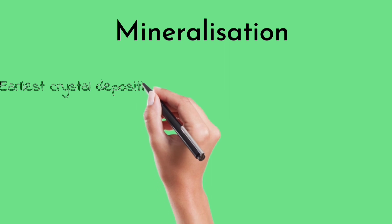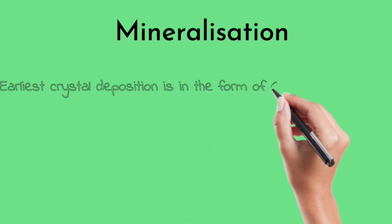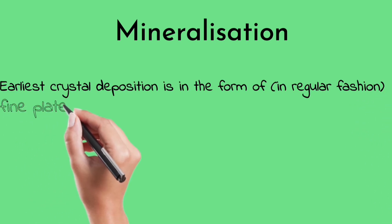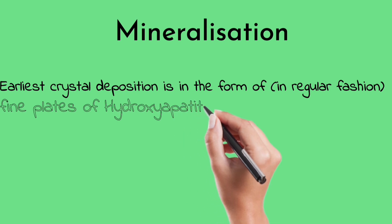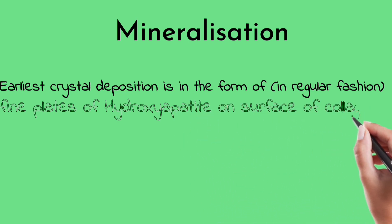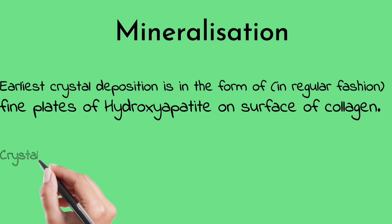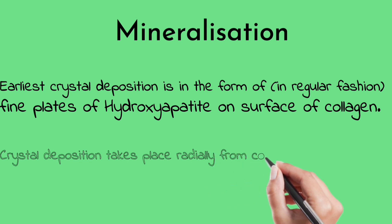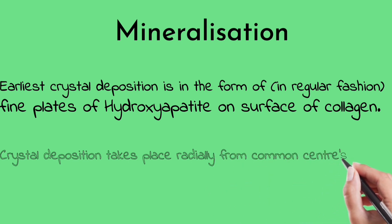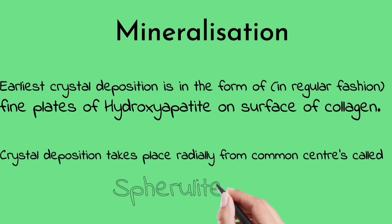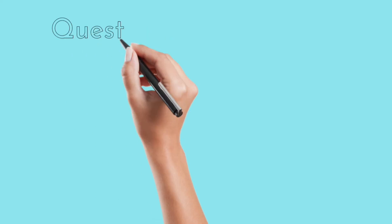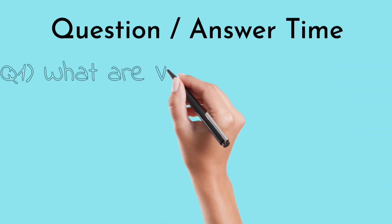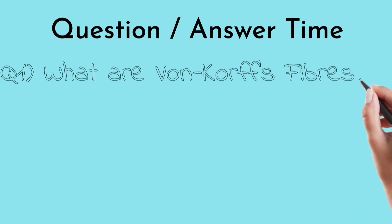In the mineralization step, the earliest crystal deposition is in the form of fine plates of hydroxyapatite crystals on the surface of collagen in a regular fashion. Crystal deposition also takes place from a common center called a spherite — an important question.